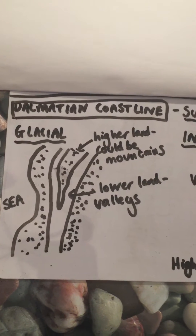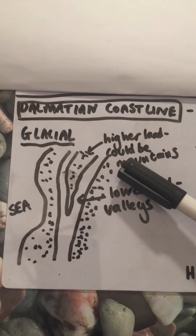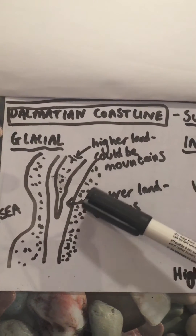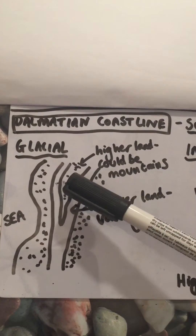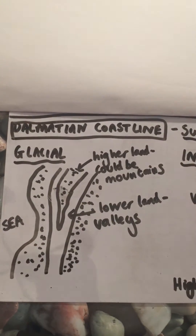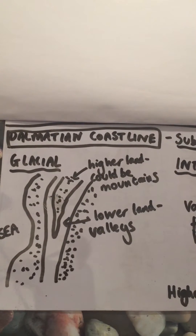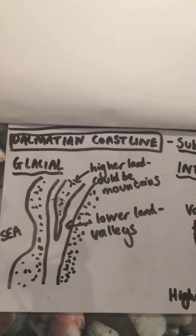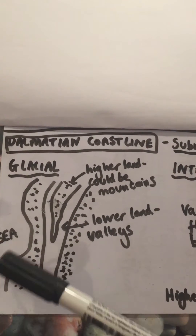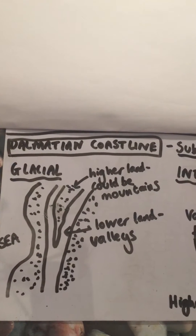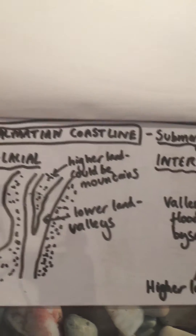This first diagram shows a glacial period. Wherever it's dotted represents land - you've got a bit of land at the coastline, then some higher land, and then another bit of higher land. The undotted areas in between are valleys. So you've got higher land, valleys, higher land, and then the sea. In a glacial period, the sea level would be lower.